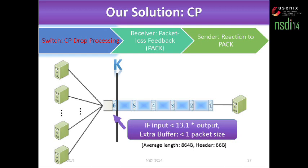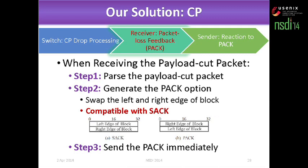If the input traffic is lower than the output traffic, it is increased by 13 times. When the receiver receives payload-cut packets — which contain only the header — there are three steps. The first step is to parse the payload-cut packets and get two things: the start sequence number and the packet length. Then we can generate the PACK option. We designed the PACK option very similarly to the SACK option — we just swapped the left and right edges of the block to indicate the lost information.